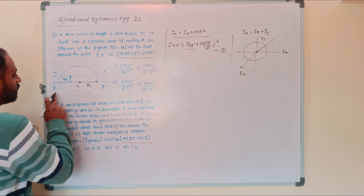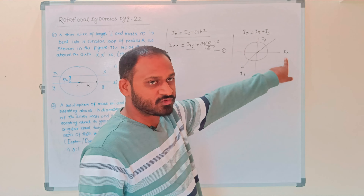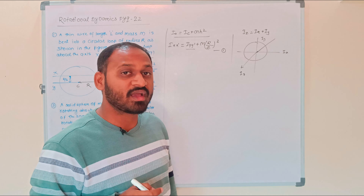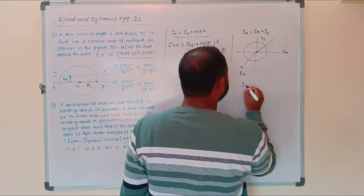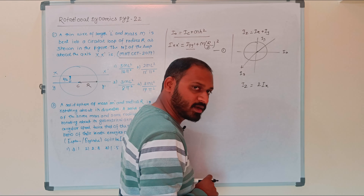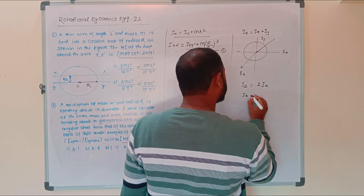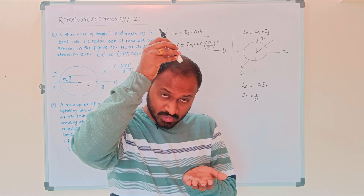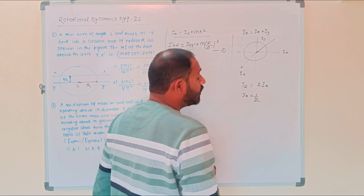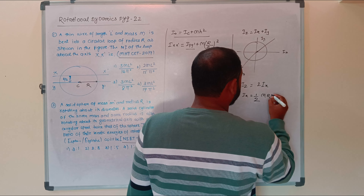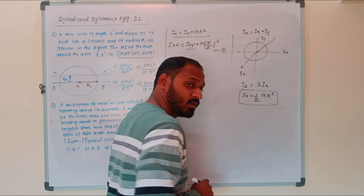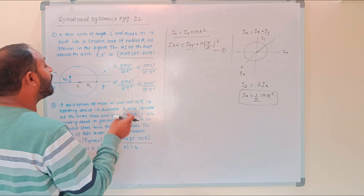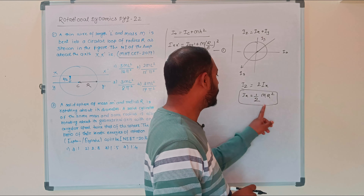The moment of inertia along YY prime — because of the symmetry of the ring, the moment of inertia along x equals the moment of inertia along y. Therefore I_z = 2 × I_x, so I_x = (1/2) × M R². The moment of inertia along an axis passing through the center and perpendicular to the plane of the ring is M R².